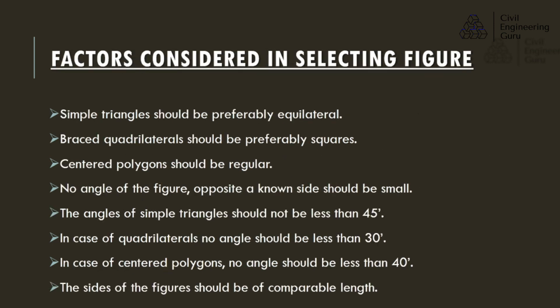Factors considered in selecting figures: simple triangles should preferably be equilateral; braced quadrilaterals should preferably be squares; centered polygons should be regular. No angle of the figure opposite a known side should be small. The angles of simple triangles should not be less than 45 degrees; in case of quadrilaterals, no angle should be less than 30 degrees; in case of centered polygons, no angle should be less than 40 degrees. The sides of the figures should be of comparable length.